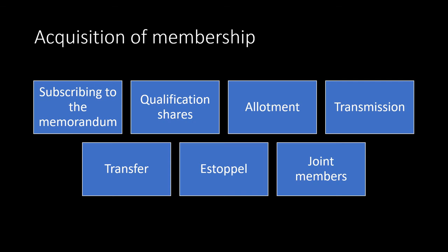If we want to become a member of a company, how do we acquire membership? The first and foremost method is by subscribing to the memorandum. When the company is formed, it makes a new memorandum, and those people who are ready to become the first members will have their names and addresses written in the memorandum in the subscription clause. They are the first members of the company.